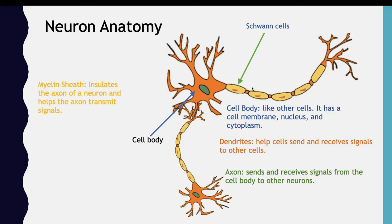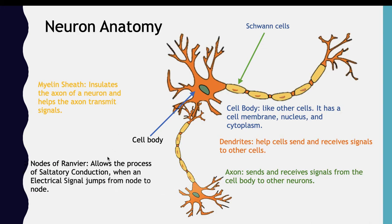In between the Schwann cells we have these small orange parts, and those are called the nodes of Ranvier. The nodes of Ranvier allow the process of saltatory conduction — there are ion channels in the nodes of Ranvier, and the electrical signal triggers them, making the signal jump across the nodes of Ranvier, which allows it to travel fast.